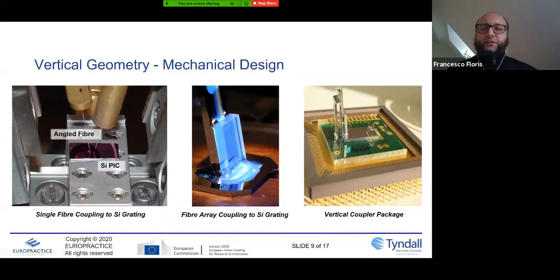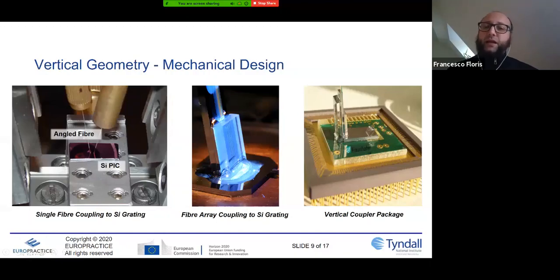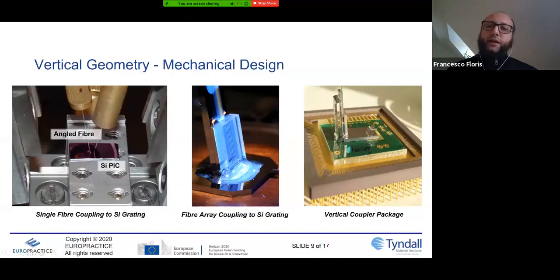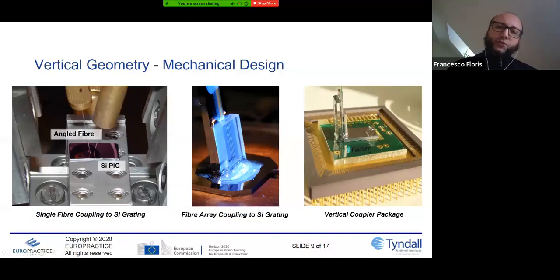In the central image, you can see an array of fibers coupled on top of a silicon chip. We are using the vertical geometry and it's clear that from a mechanical point of view this is not the best option — you can break the fiber. At the contact surface between the fiber array and the silicon chip, you can see the epoxy. On the right, an example of a fully packaged device — again, not the best solution and not easy to handle.